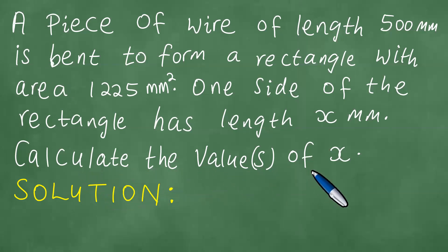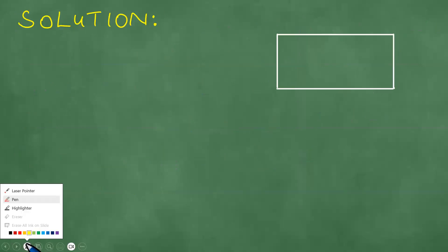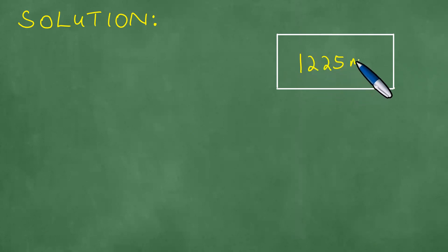Calculate the values of x and we present the solution to the problem. And we proceed as follows. First things first, we're able to see that this area here is 1225 square millimeters. This is x. And so now we can call this the length.